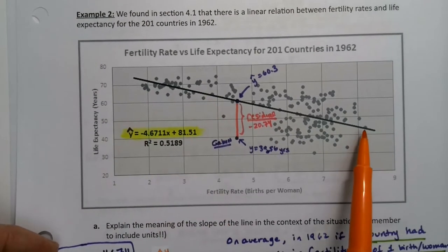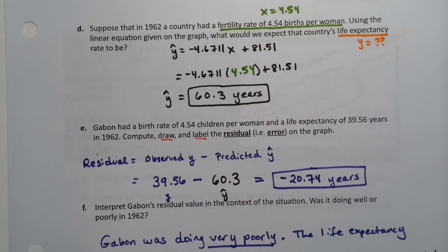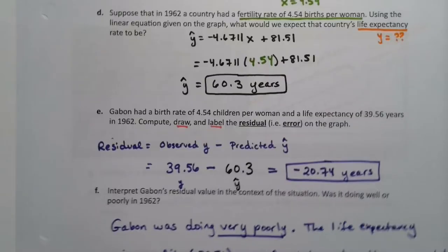all the way up to 8.2 over here. So that's well within our known data points. So when we did that, we were making an interpolation. So that was an example of interpolation.